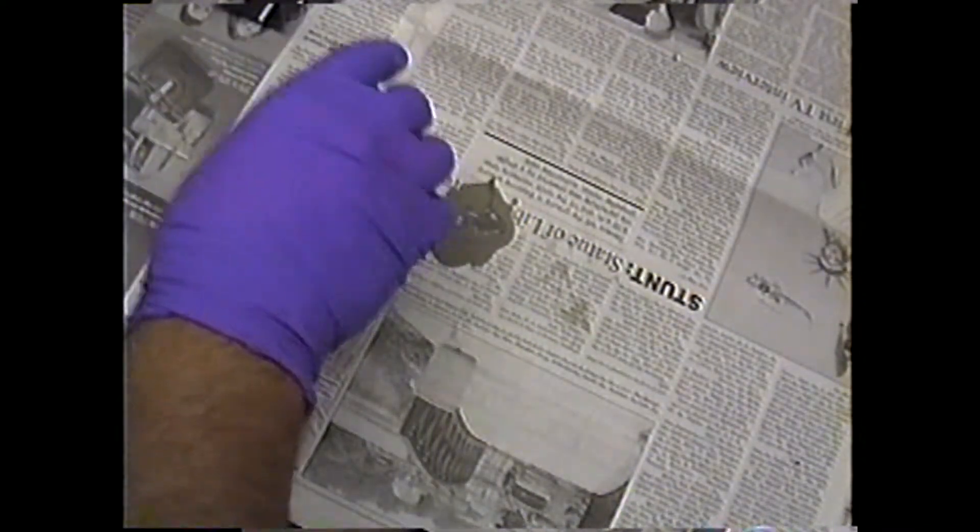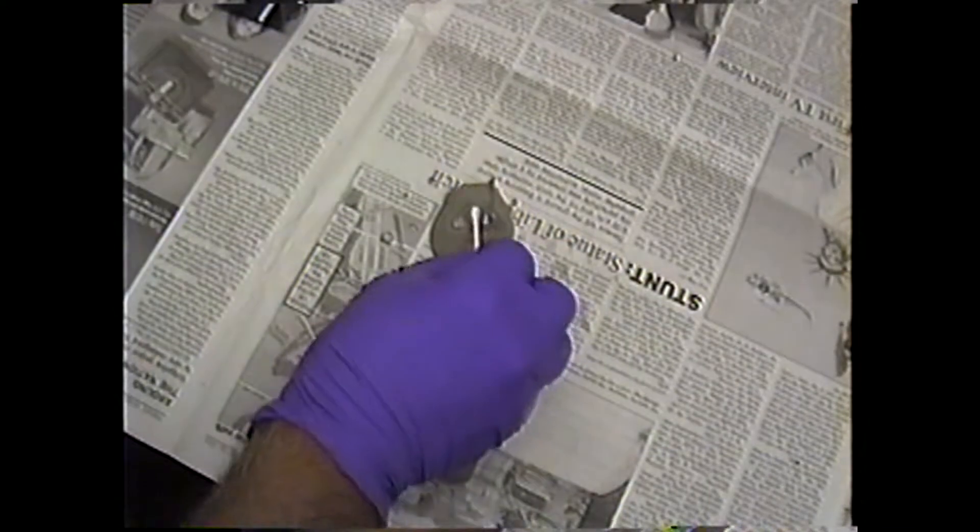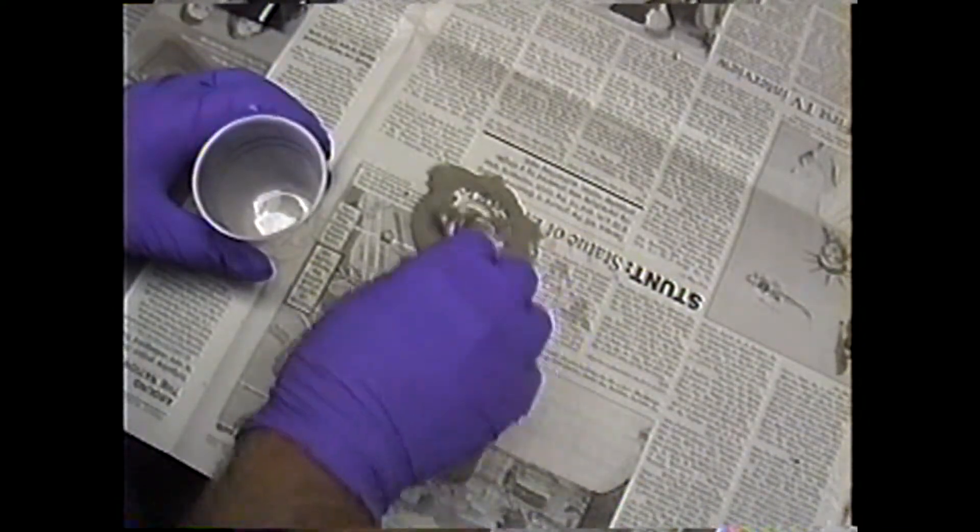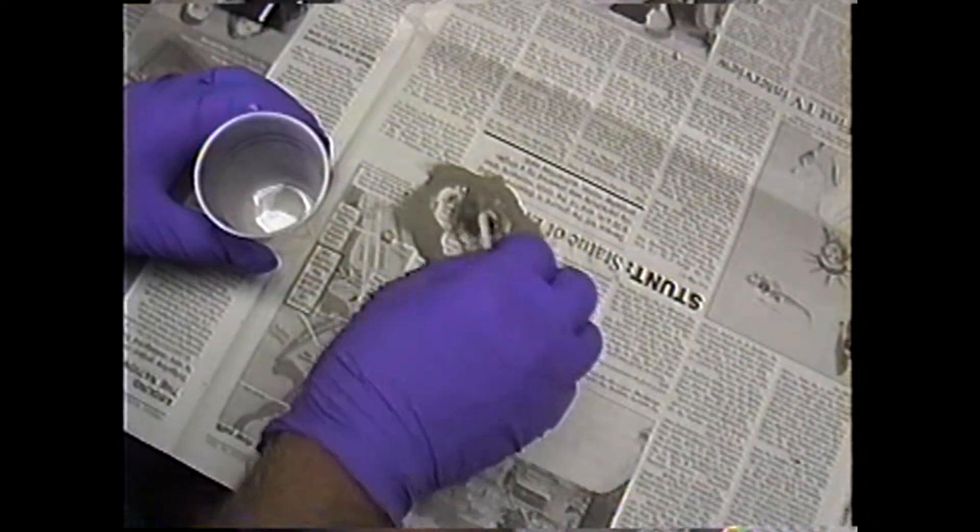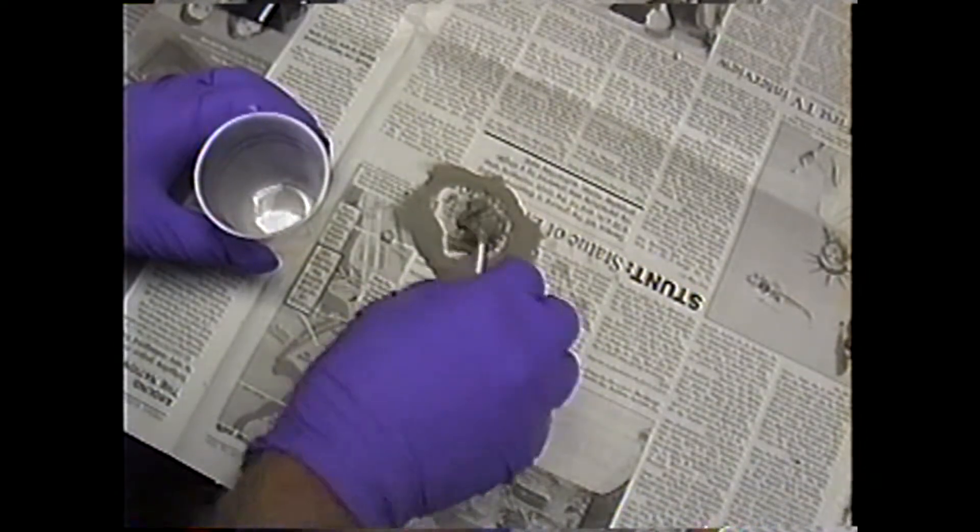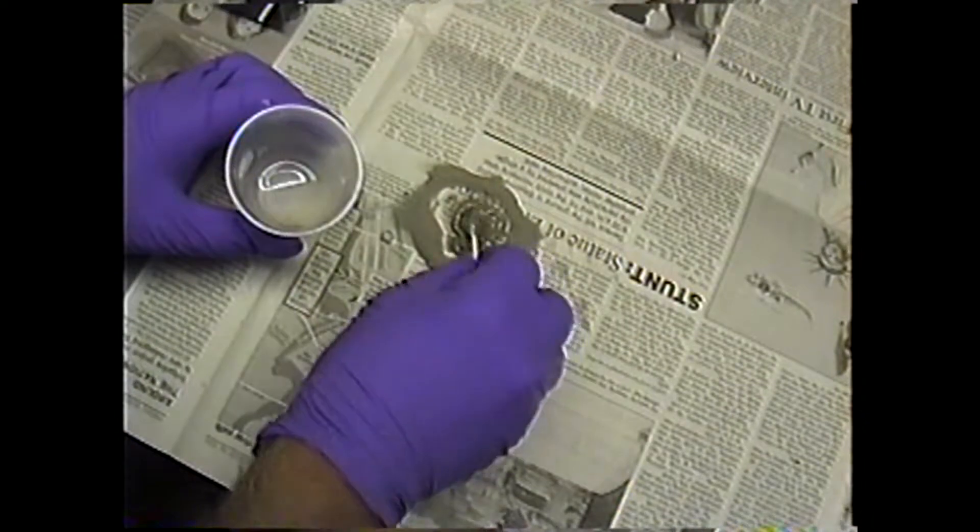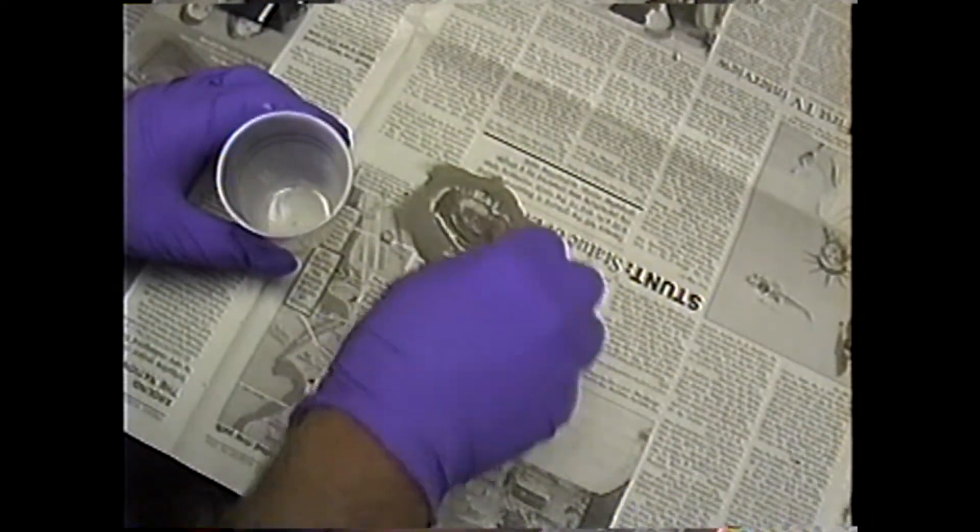Now the next step, while that's still wet, make me up a little bit of paste. Again, there's no set formula. That's a little bit on the thick side. Now it's just about right where it's thixotropic.